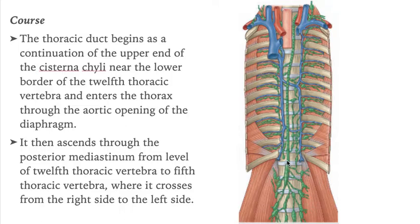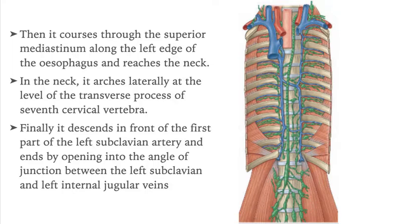It then ascends through the posterior mediastinum from the level of the 12th thoracic vertebra to the 5th thoracic vertebra, after which it crosses from the right to the left side. Then it courses through the superior mediastinum along the left edge of the esophagus.